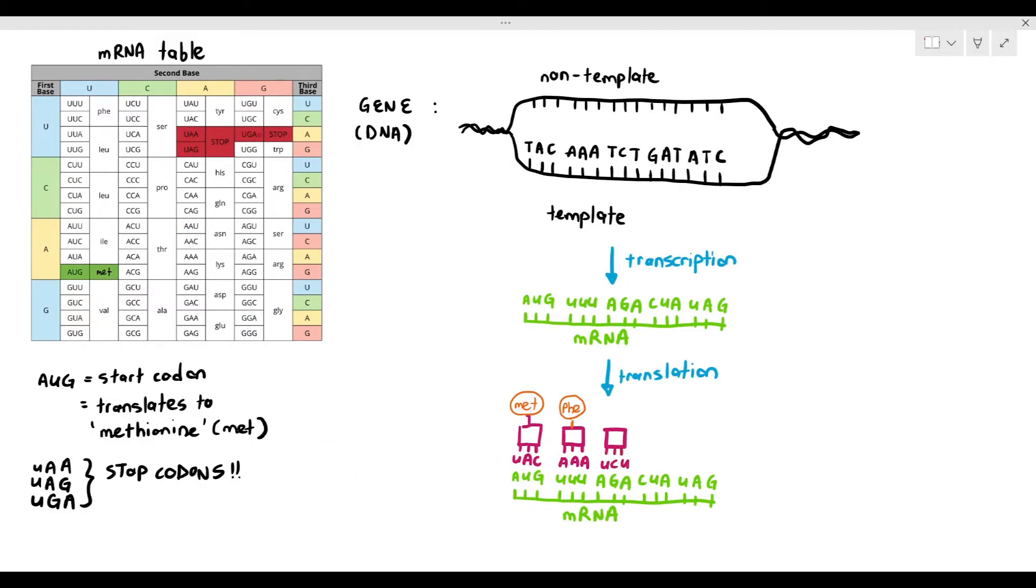Next codon, AGA, if we consult the table, it's amino acid arginine. Next codon, CUA, tRNA is GAU, and the amino acid is leucine, and UAG translates to a stop codon. And there you go. You've got a polypeptide chain consisting of four amino acids. This is how transcription and translation plays out, and you can consult the table for this.